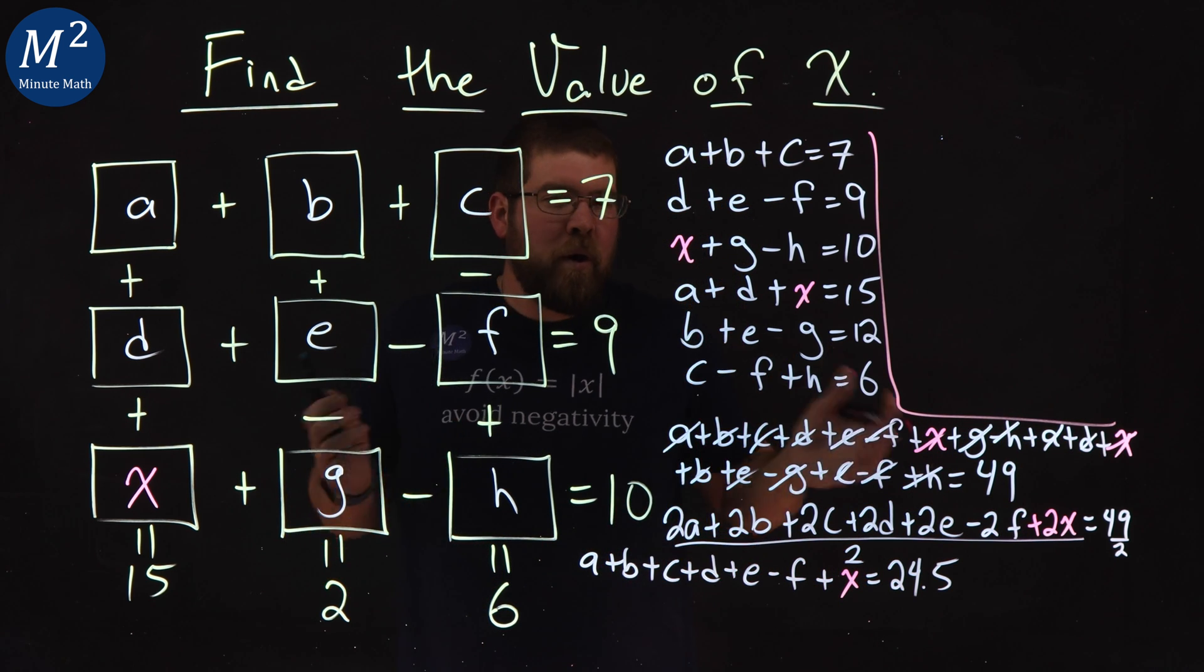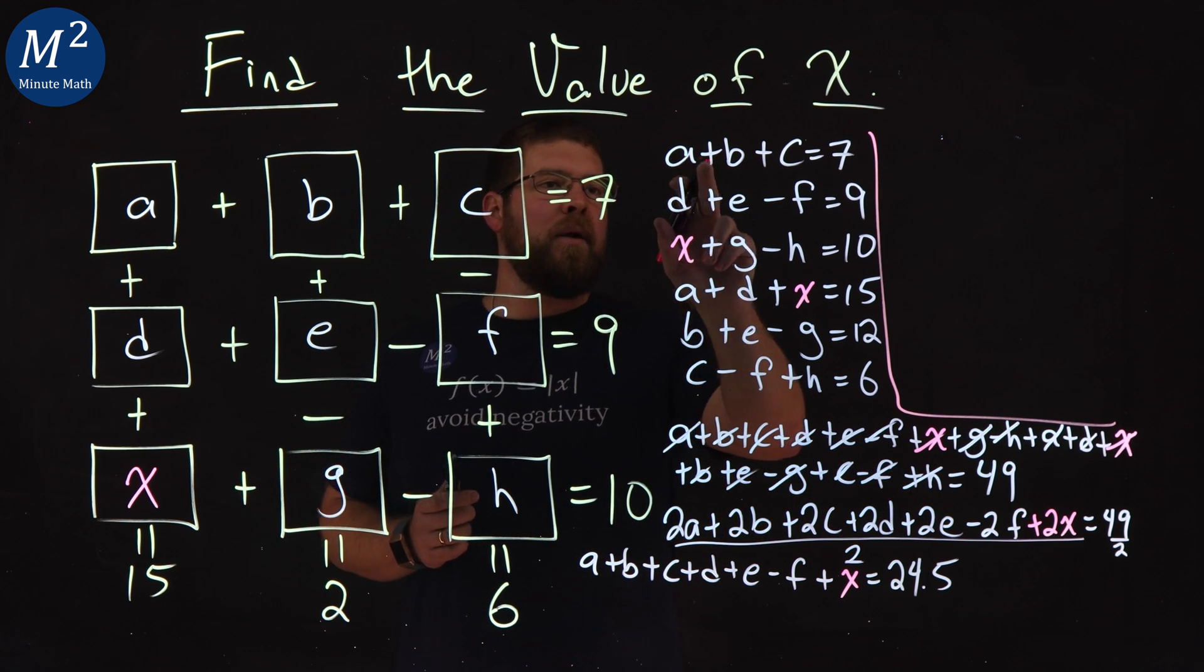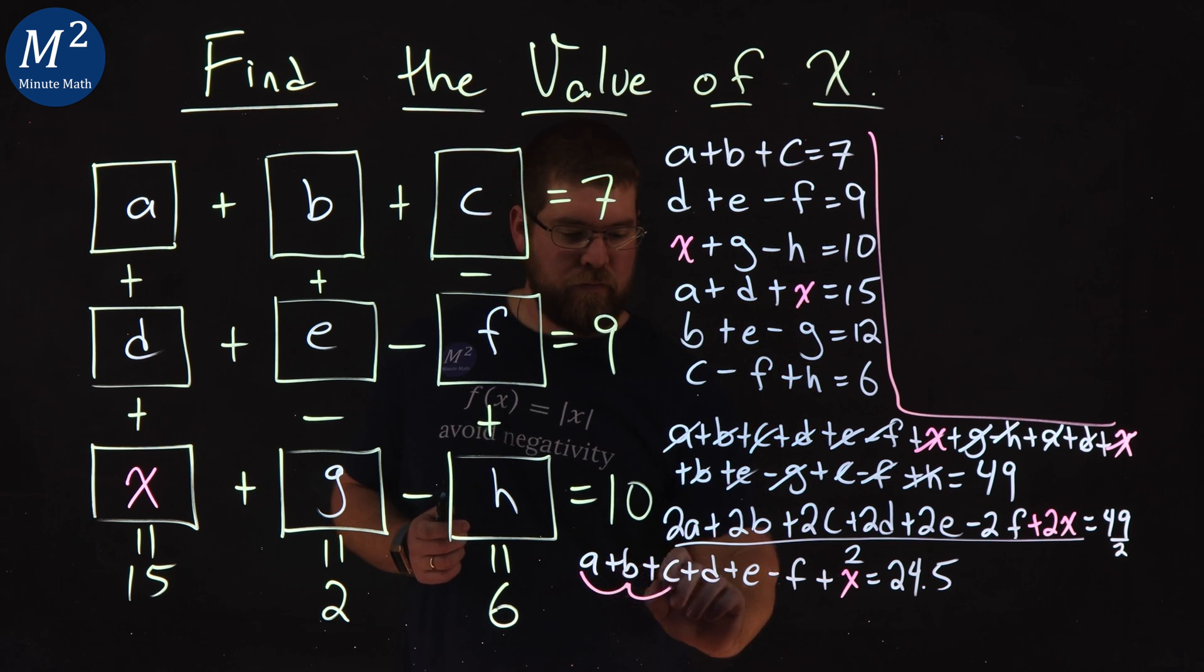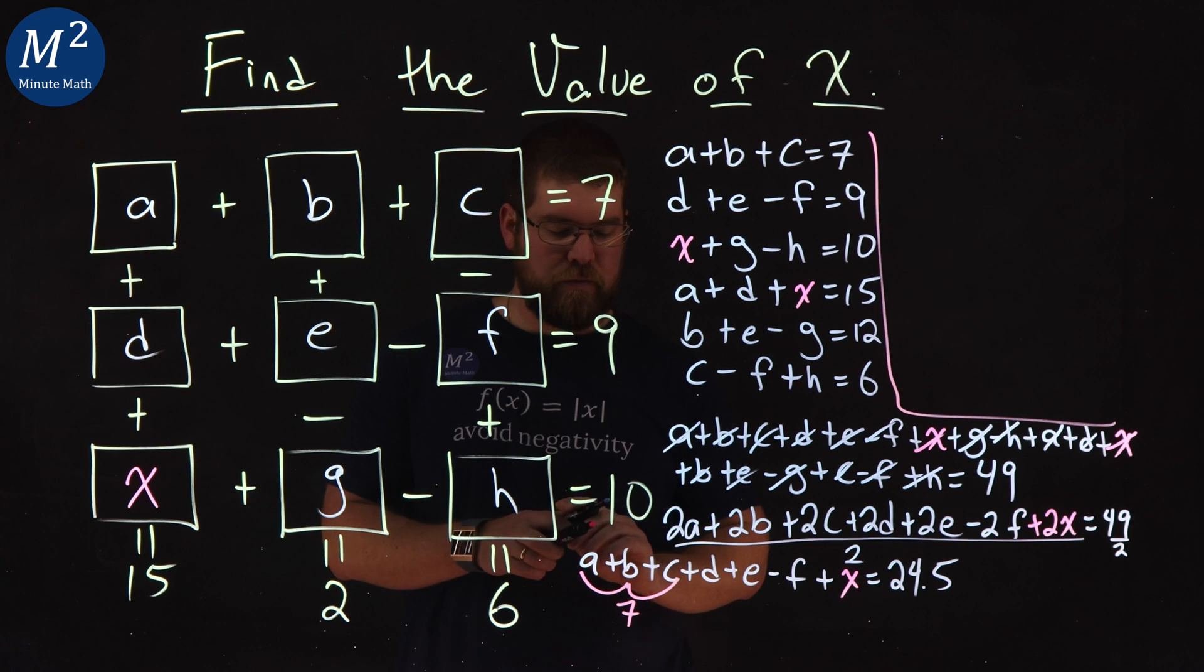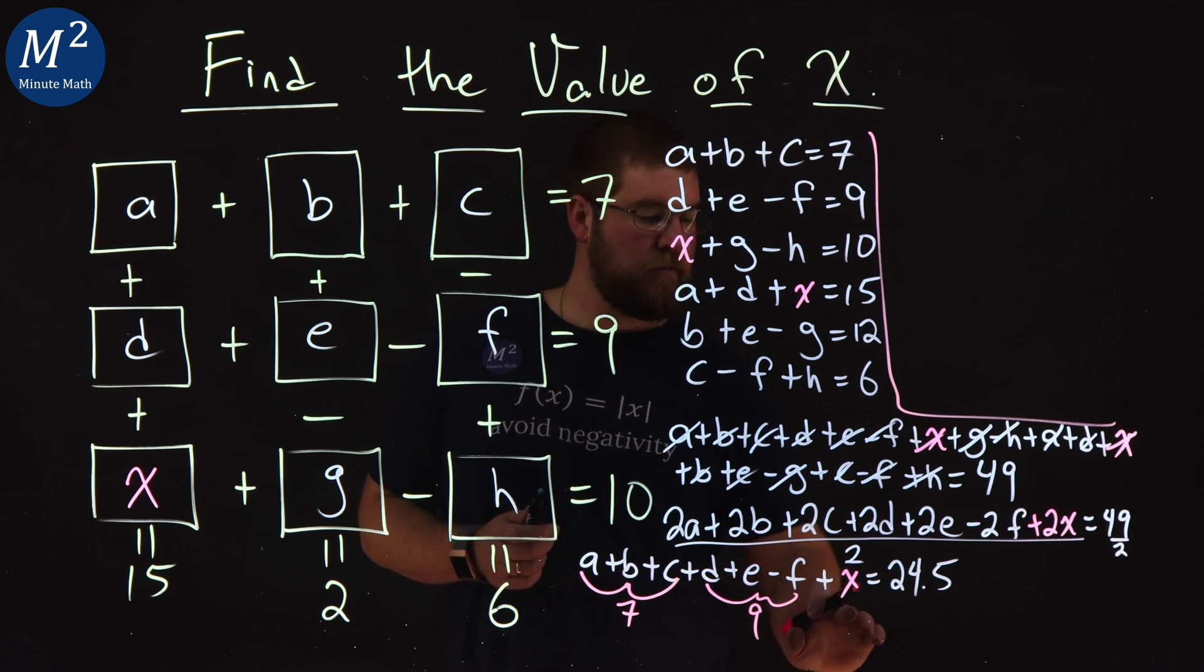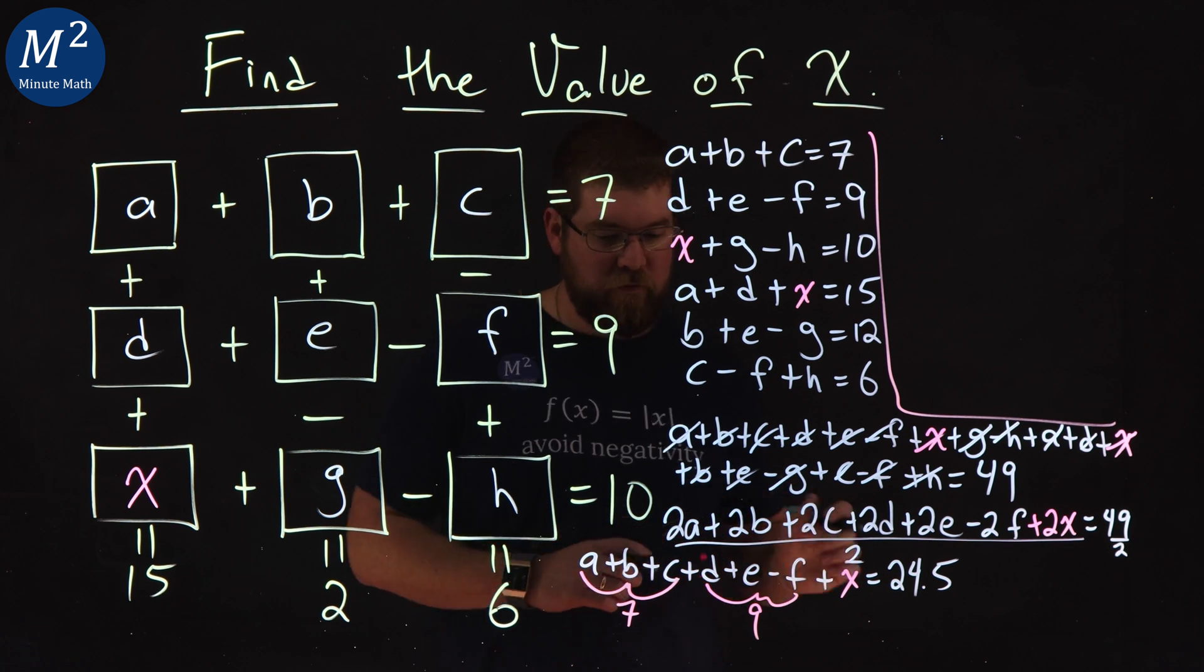So where do we go from here? We have a lot of variables. Notice, though, A plus B plus C is equal to 7. 7 here. Oops. Well, I'll keep it in pink. D plus E minus F is a 9. X is by itself. And we have 24.5.